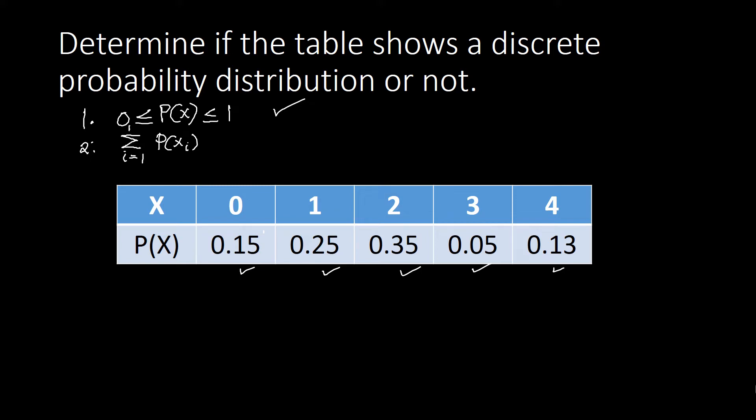That will be equal to one. So what do we mean by this? This would simply mean that you are going to add all those probabilities in here. Once that is equal to one, that means this is now a probability distribution.